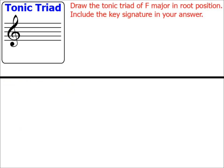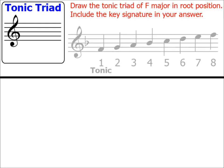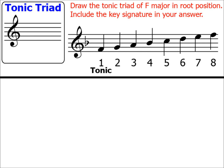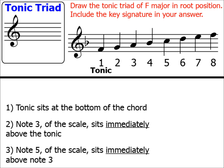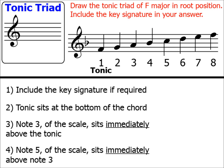Let's attempt a typical music theory exam question: draw the tonic triad of F major in root position, and include the key signature in your answer. Here's a scale of F major. This time the question asks us to include the key signature of F major, so we need to add an extra step to our instructions: include the key signature if required. Straight away, we pop in the key signature of F major — one flat, the B flat — onto the tonic triad. Step 1 complete.